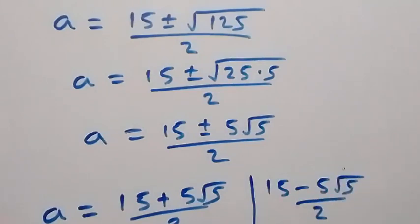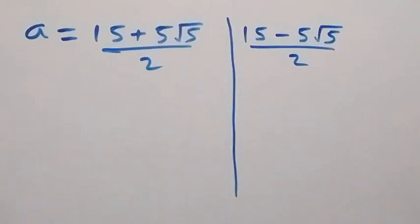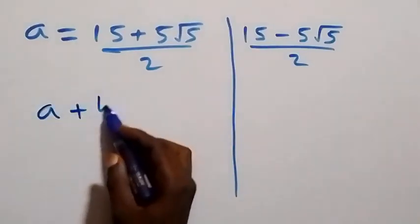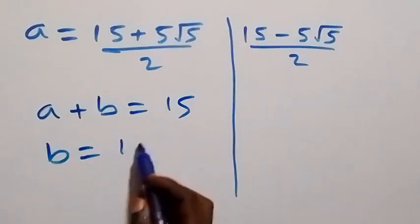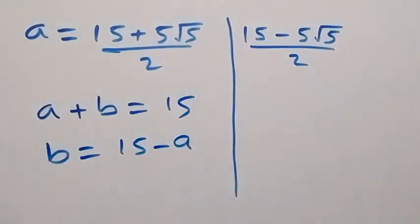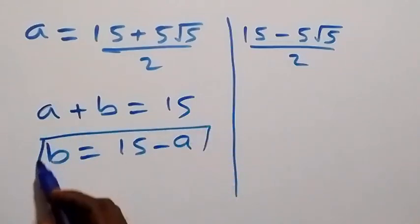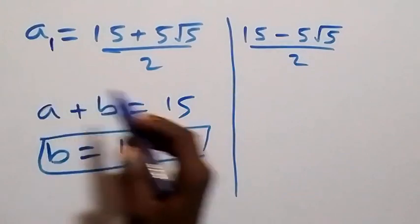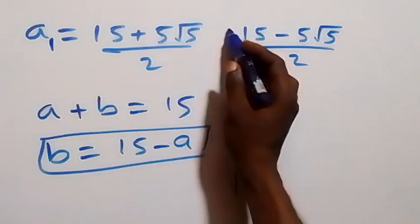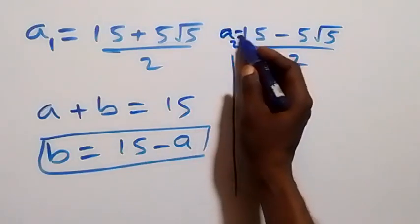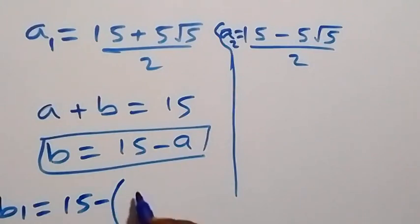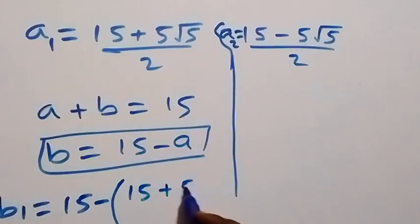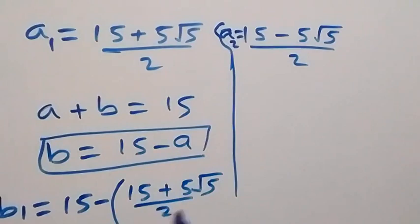Using the relation a plus b equals fifteen, we make b the subject: b equals fifteen minus a. We can use this to find the corresponding values of b. If a1 and a2 are our two values, then b1 equals fifteen minus a1, which is fifteen minus the bracket fifteen plus five root five over two.